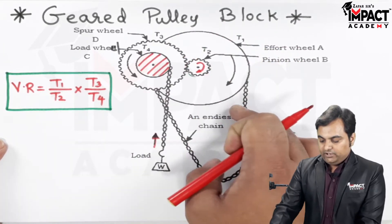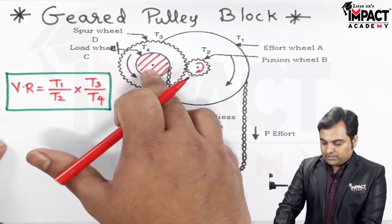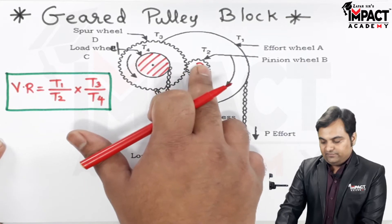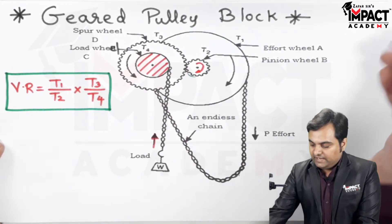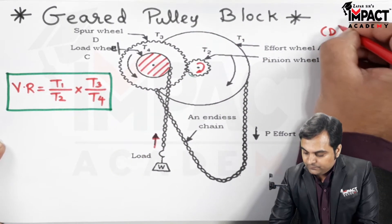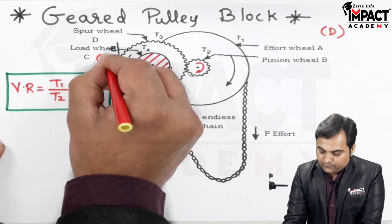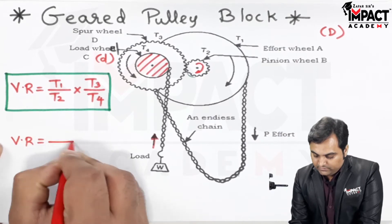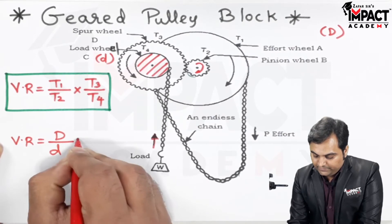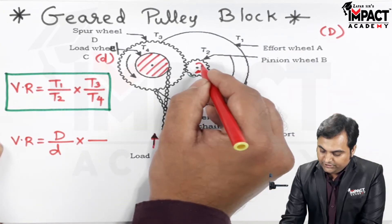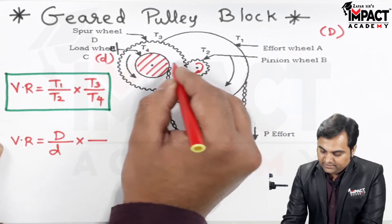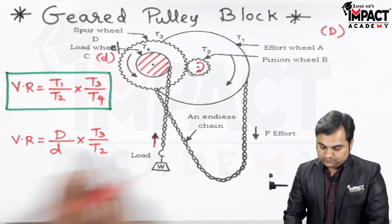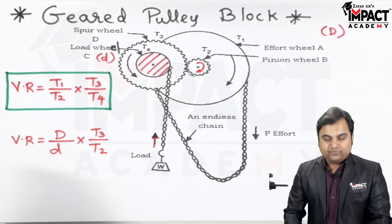Instead of having number of teeth on the effort wheel and load wheel, if we simply have a pulley on the effort wheel and a pulley on the load drum — while T2 and T3 are still in the form of pinion and gears — then if the effort wheel diameter is capital D and the load wheel diameter is small d, the velocity ratio formula becomes: capital D divided by small d, multiplied by T3 divided by T2.